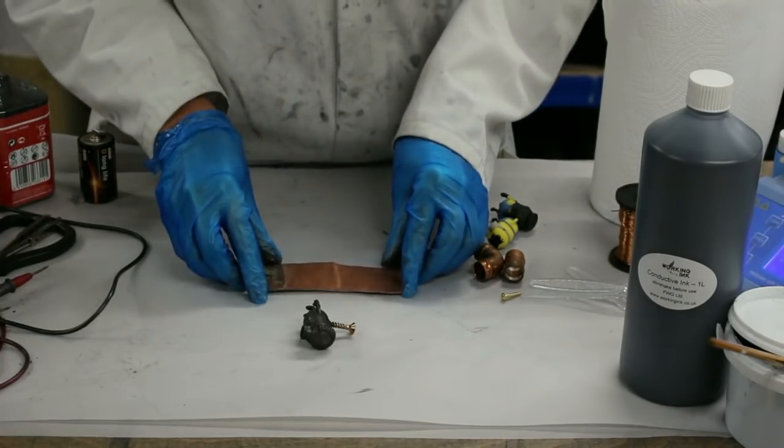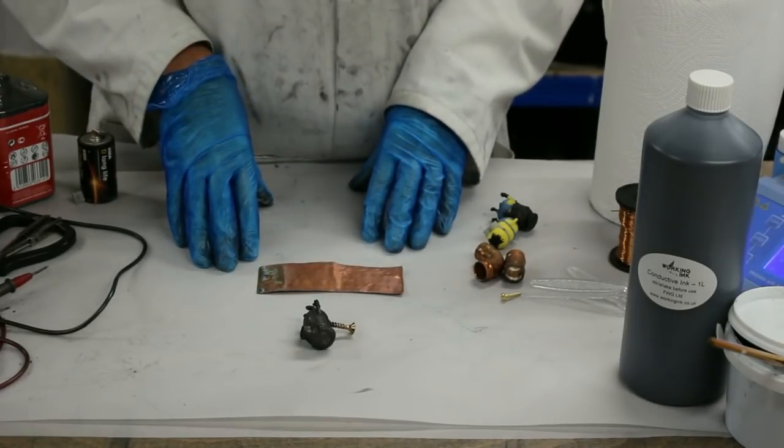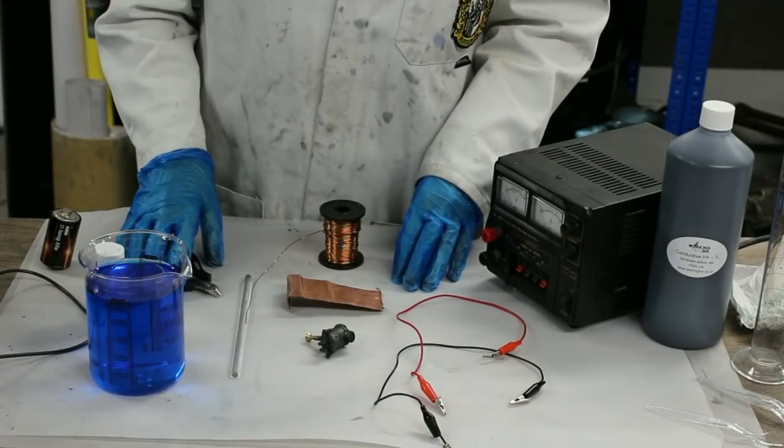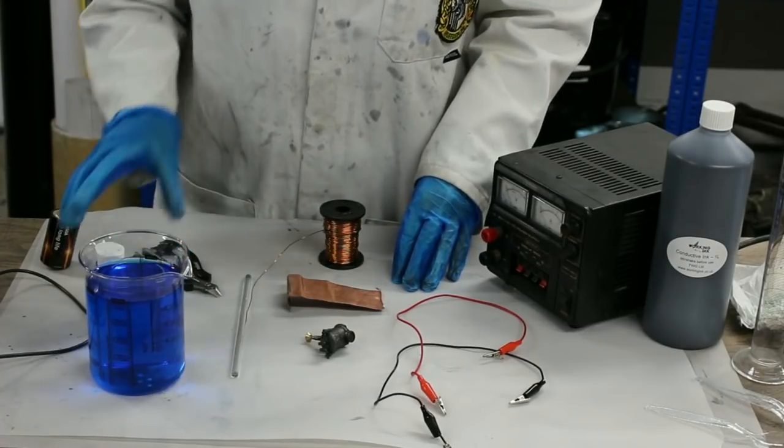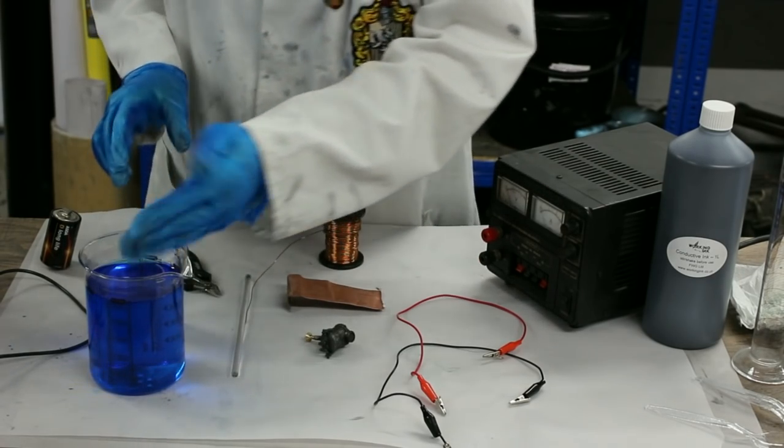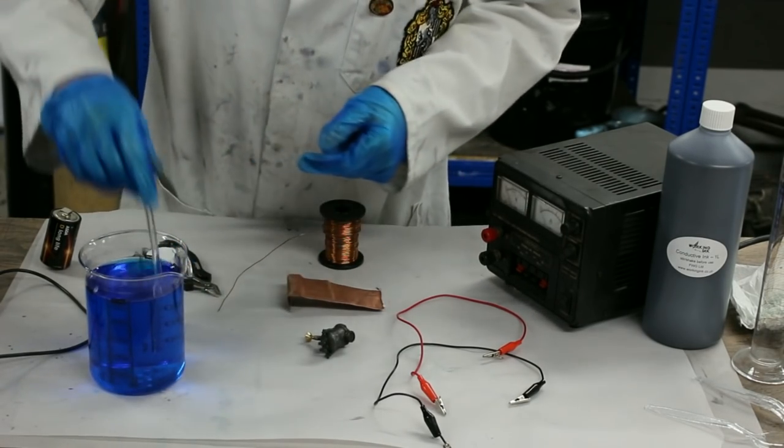So now that we've got that made it's time to put it all together. Right, I've gathered all my items that I need together. I'm going to put a couple of saccharine in the copper sulfate solution to act as a brightener. Let's give that a little stir.